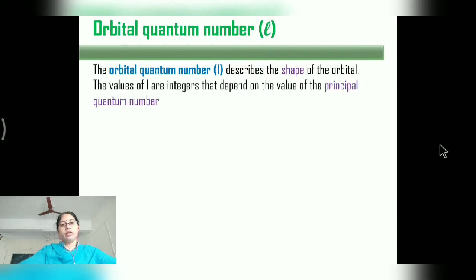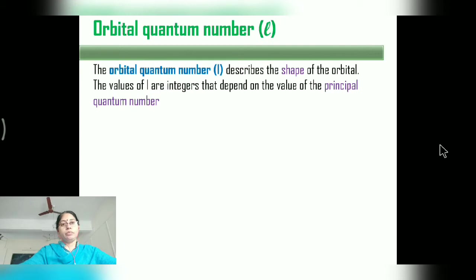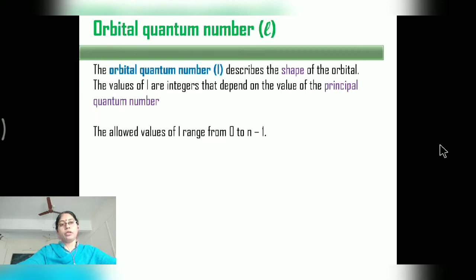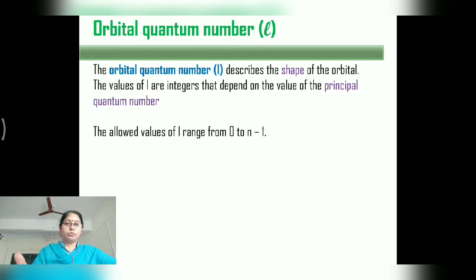The values of L are integers that depend on the value of the Principal Quantum Number. The allowed values of L range from 0 to N minus 1. Suppose N equals 3; then L can take values 0 to N−1, which is 0 to 2, so L = 0, 1, 2.